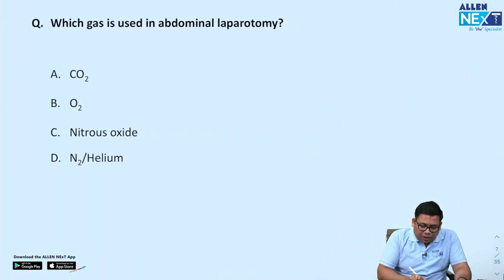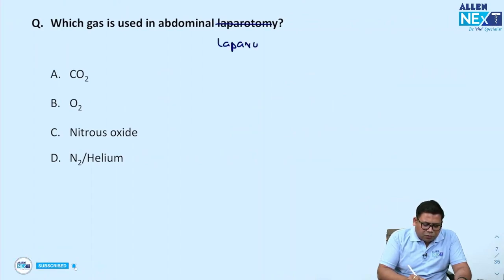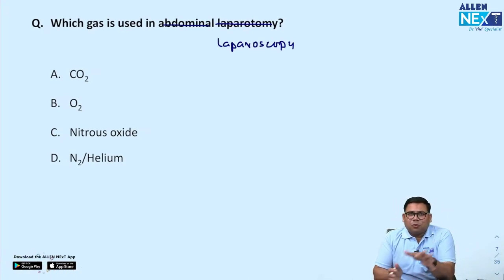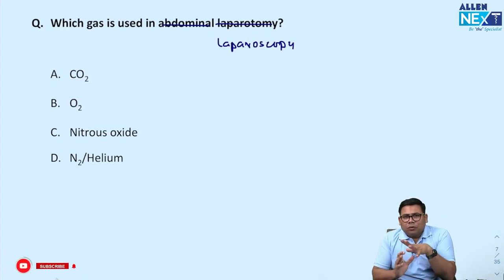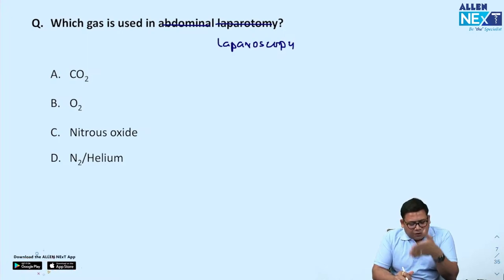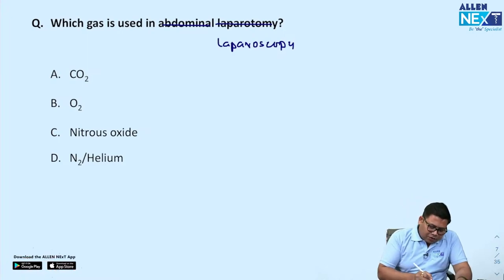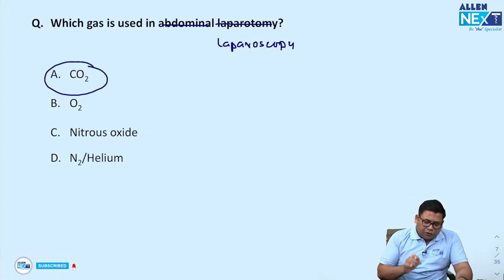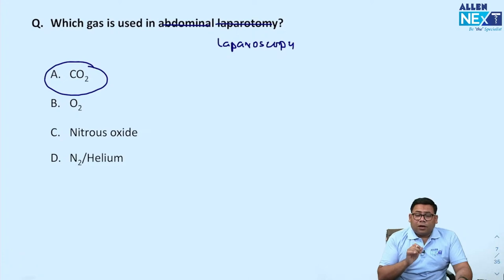The gas used in laparoscopy — not laparotomy. The word 'lapar' means abdomen and 'scopy' means to explore with an endoscope, while 'tomy' means to open. Laparotomy does not require any gas. For laparoscopy, CO2 is the preferred gas of choice. All gases are used but CO2 is preferred. Why CO2? Because it is cheap, odorless, and non-combustible.